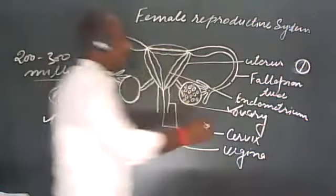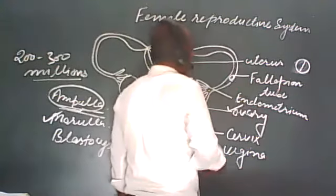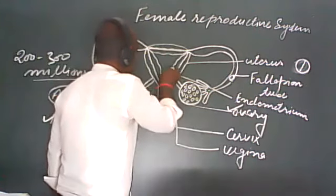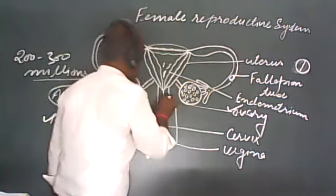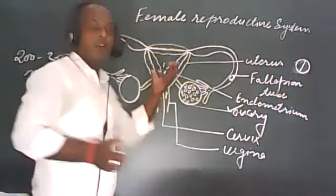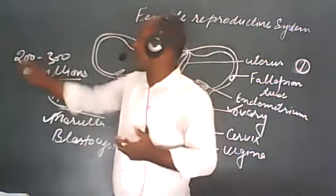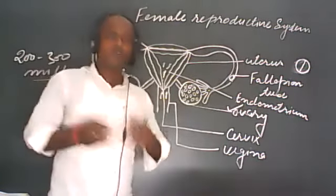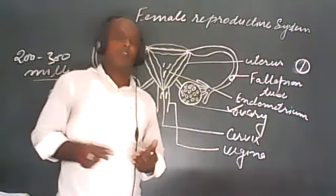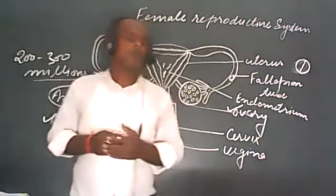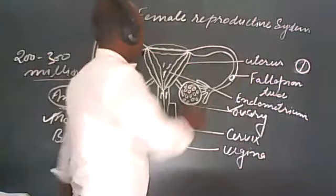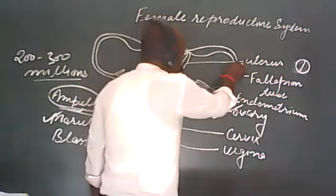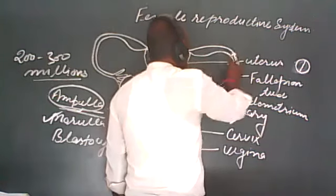Suppose the ovum is present in the fallopian tube and sperm reaches from below. In one ejaculation the number of sperms is near about 200 to 300 million, but most of these sperms are killed by the secretion of different chemicals in the female reproductive organs. Very few can survive and reach into the fallopian tube, where fertilization occurs and the zygote is formed. That zygote starts to develop by mitotic division.